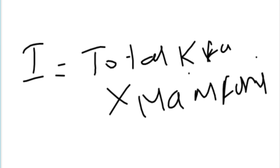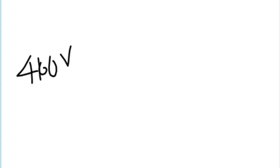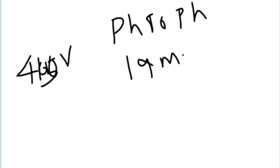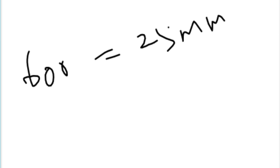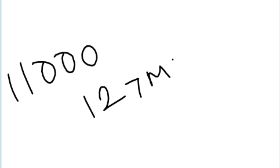Now let's look at one bus bar which is very important. So the bus bar is inside the switchboard. Phase-to-phase clearance is 19 mm. Phase-to-earth is 16 mm. So this is for 600V — phase-to-phase is 25 mm. Phase-to-phase is 19 mm. So this is for 1000V. For 11 kV, phase-to-phase is 127 mm and phase-to-earth is 20 mm. Phase-to-phase is 77 mm and phase-to-earth is 20 mm.